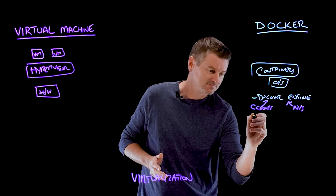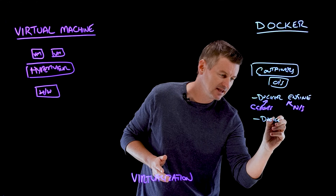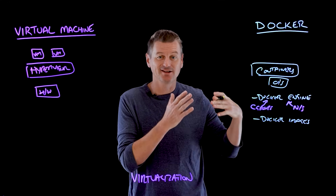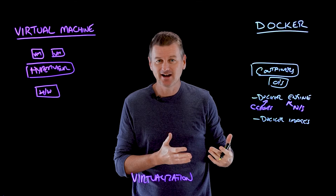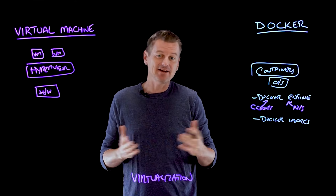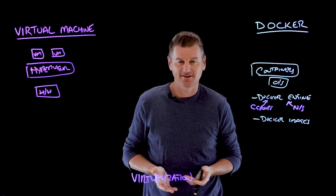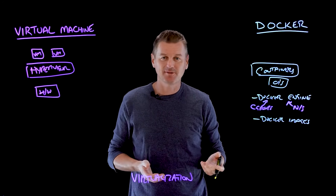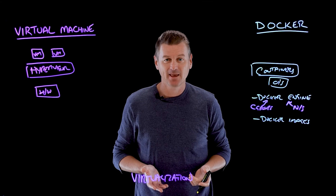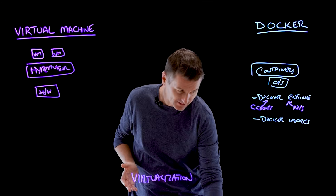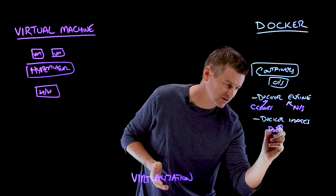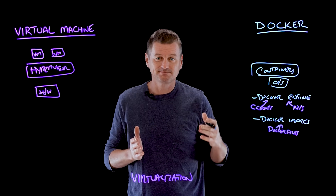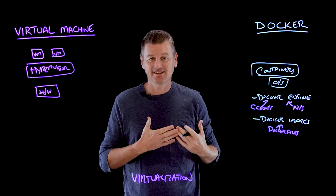There are also Docker images. Docker images are lightweight, standalone, executable packages that include everything you need to run a piece of software — the code, the runtime, the system tools, the libraries, and any settings needed. Docker images are built using Dockerfiles, which are simple documents that provide instructions for creating the image.